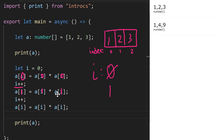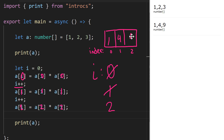After this line completes, `a[1]` is going to be 4. Then we increment `i` one more time, so `i` is now 2. Now we're saying `a[2]` is assigned `a[2]` squared — 3 times 3 is 9. So nine is stored at index 2 and we get the same result.